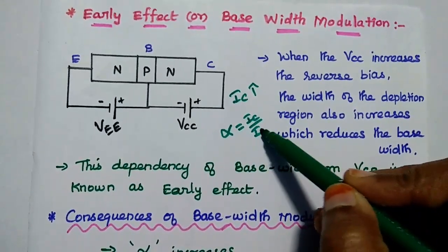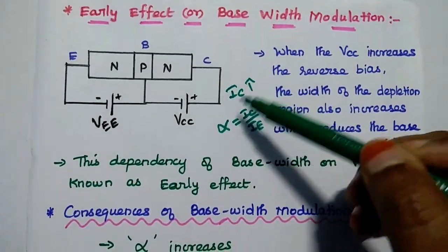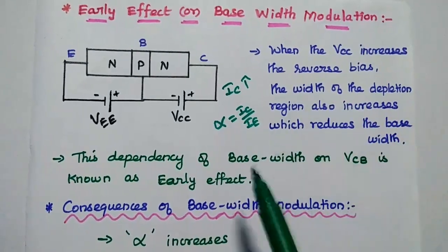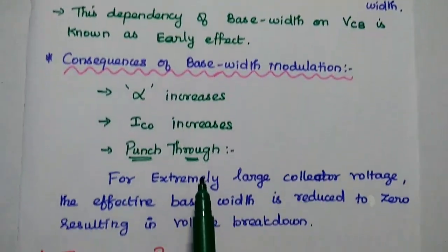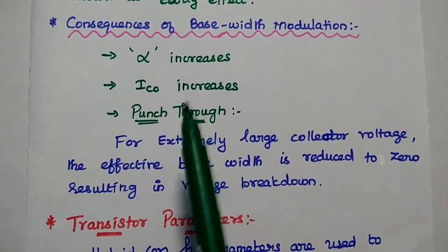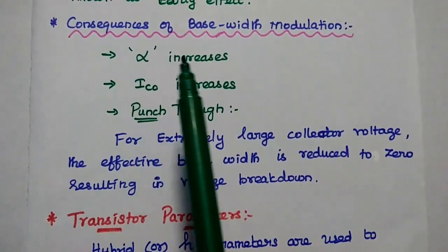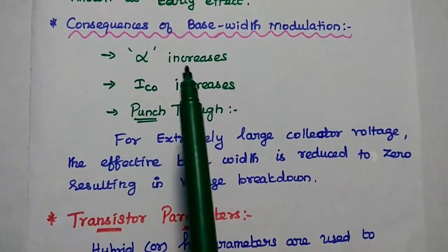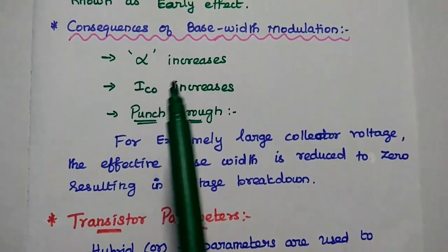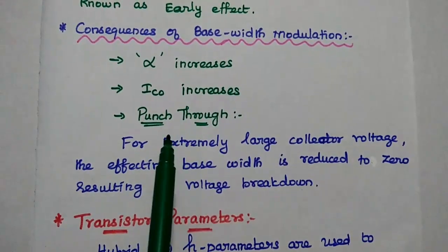If the reverse bias is increased, the base width is reduced. Due to this, the collector current increases. Since collector current increases, the current amplification factor — output current divided by input current — also increases, giving a higher current gain. As a consequence of base width modulation, the current amplification factor increases and the reverse saturation current also increases.